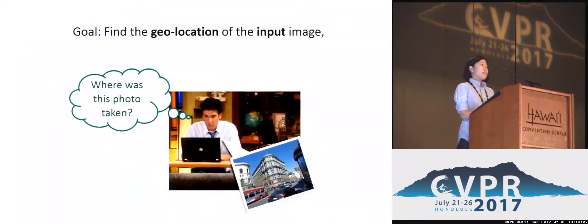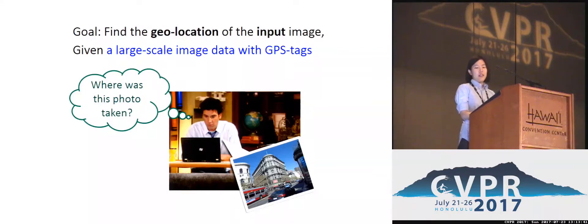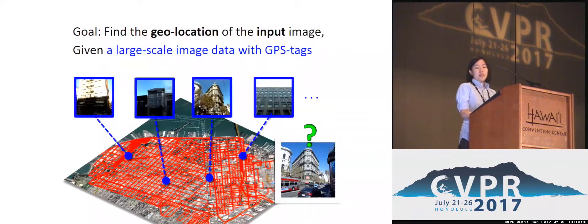We consider the task of visual image geolocalization, where the goal is to find the geolocation of the input image, given a large database of images that have GPS tags — for example, Google Street View images. By finding images that depict the same place as the query, we can transfer its location.